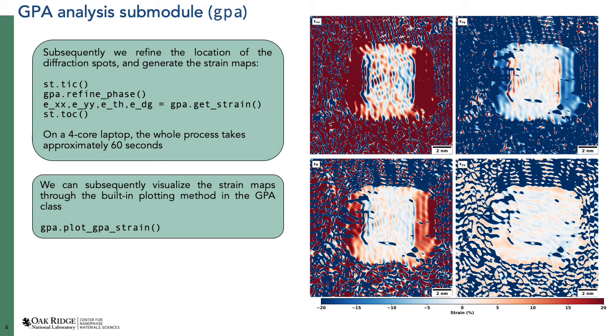Remember this was a nanoparticle, so anything outside of the nanoparticle the strain maps are not correct. But for normal non-nanoparticle images this works great.